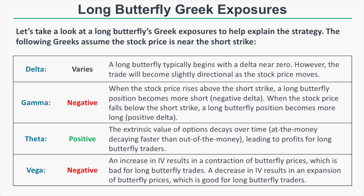Regarding theta decay, a long butterfly spread has positive theta. If the stock price is near the short strike, those short at-the-money options have more extrinsic value to lose than the out-of-the-money and in-the-money long options, so you collect extrinsic value as time passes. A long butterfly position also has negative vega: an increase in implied volatility causes the butterfly price to contract — bad for long butterflies — while a decrease in implied volatility expands the butterfly price, which is what you want.